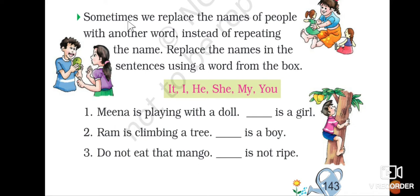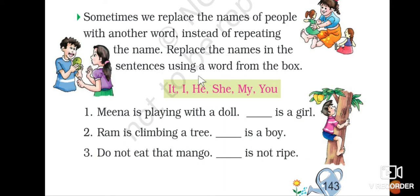What is given in this question? Sometimes we replace the names of people with another word. Kabhi-kabhi kisi person ka name hota hai, toh hum usse doosre word se replace karte hai. Instead of repeating the name, us name ko repeat karne ki bajaye, hum us name ko replace karte hai — we write another word in place of that name. So, replace the names in the sentences using the word from the box.